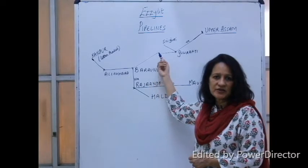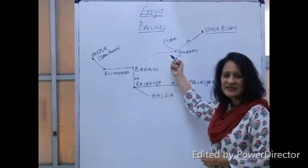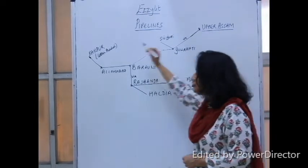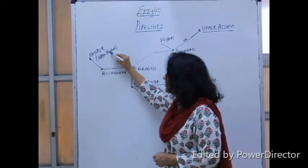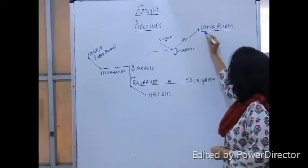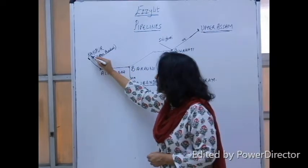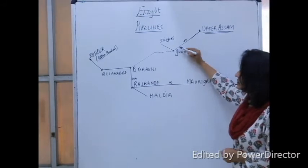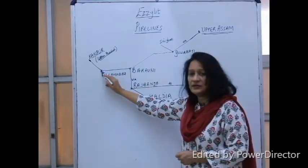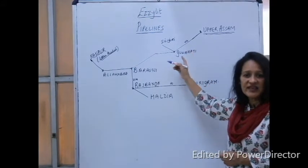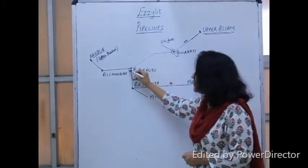So the first network is from Upper Assam to Kanpur, which is in Uttar Pradesh. Remember the two places: Upper Assam and Kanpur via Guwahati, Barauni, and Allahabad. These are the three places you have to go in this sequence: Guwahati, Barauni, and Allahabad.